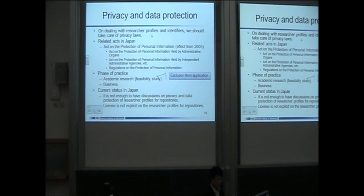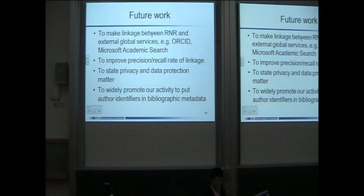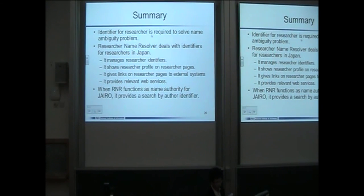We also have to address the privacy of data when connecting research profiles and identifiers. There are related acts in Japan that we must follow. We are currently in the feasibility study phase. In Japan, there has not been enough discussion about privacy and data protection. In future work, we want to make linkages between our system and global services and improve the linkage coverage. We also need to address privacy and data protection matters, and widely promote our activity to include researcher identifiers in bibliographic metadata. Thank you very much.